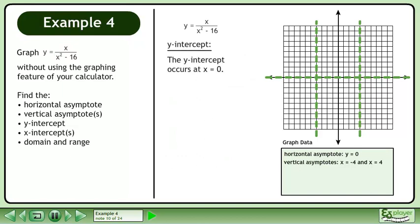Now we will find the y-intercept. The y-intercept occurs at x equals 0. Plug in 0 for x. This evaluates to 0. The y-intercept occurs at the point (0, 0).